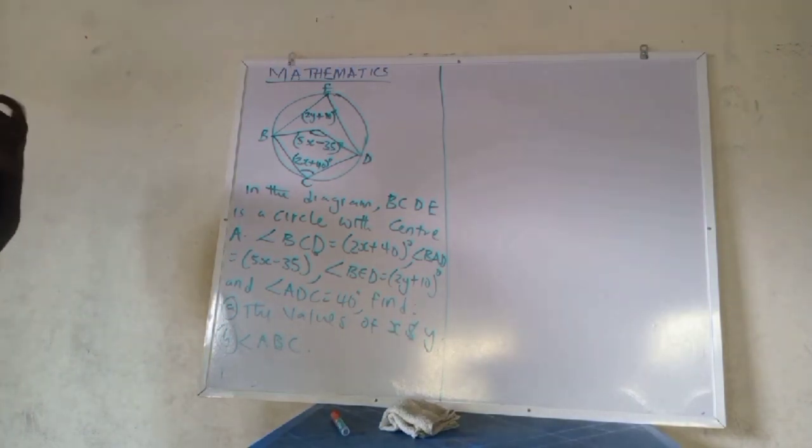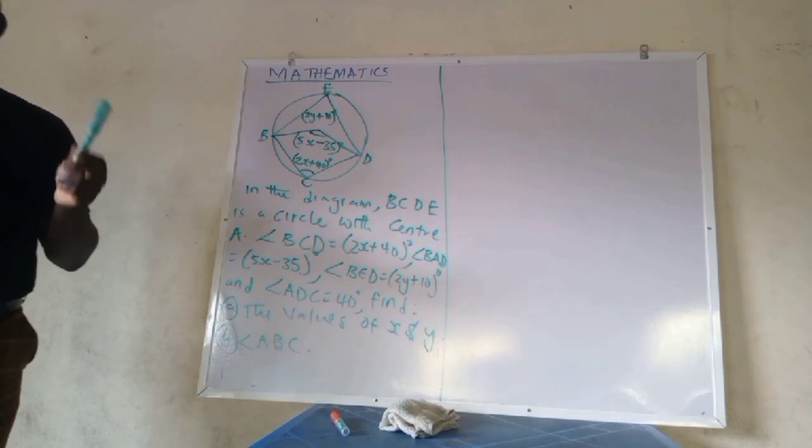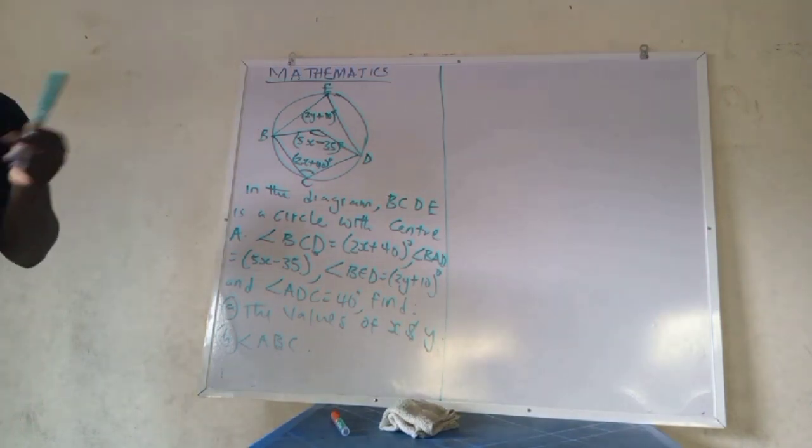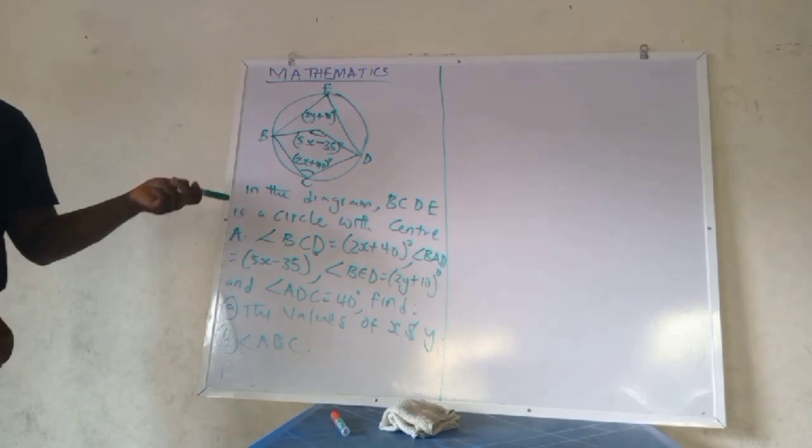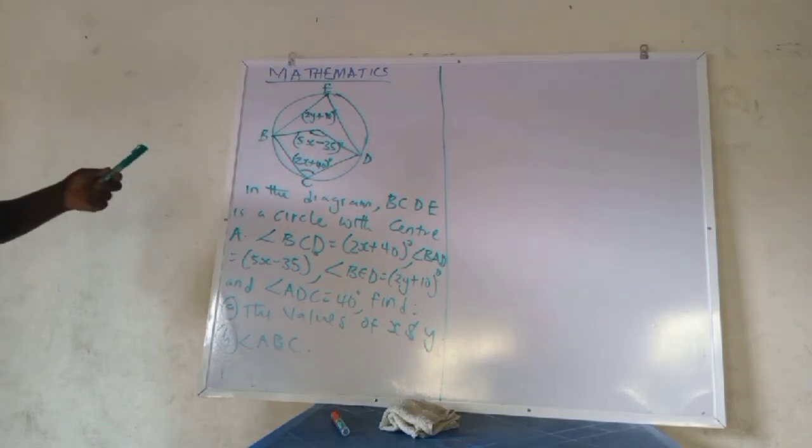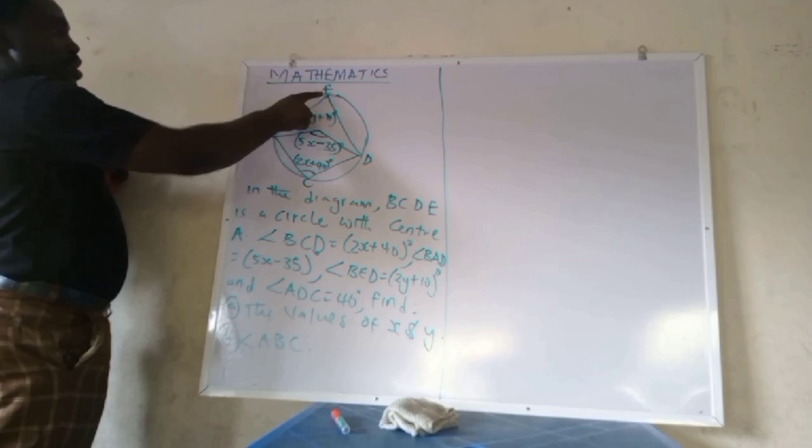This is actually from circle geometry. Circle geometry happens to be one of the topics that give students difficulty in mathematics, and here we need at least two to three theorems of circle geometry to demystify this question.